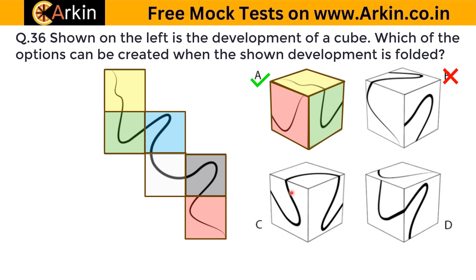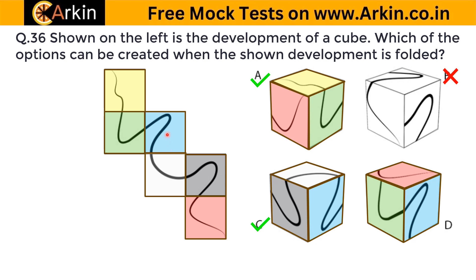Again for option C, if you see: this one is this face, this is this one, and this one is this one. If this is on top, this will come on this side and this is a different side — so this is correct. Again for option D, if you see: this pink one is this face, this one is this one, and this one is this one. These two will be adjacent sides, but if you fold it and think — if this is on top, this will be on the back/opposite side. These two cannot be on adjacent sides, so D will be wrong. The correct answer for this will be A and C.